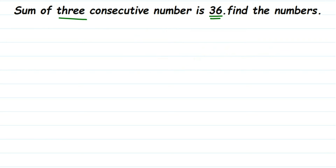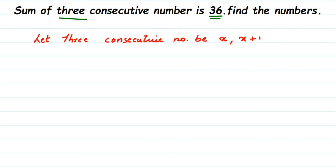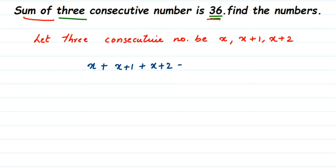Let three consecutive numbers be x, then x plus one, and the next one is x plus two. Now we're going to form an equation. They're saying that the sum of these three consecutive numbers is 36. Sum means addition, so we add all three: x plus (x plus one) plus (x plus two) is equal to 36.